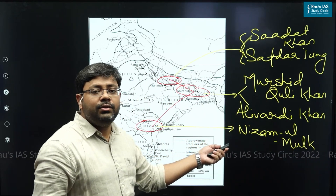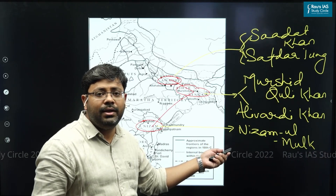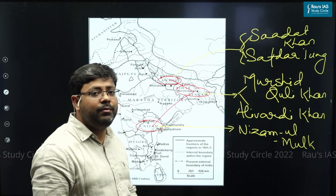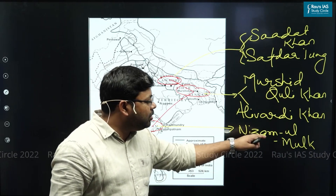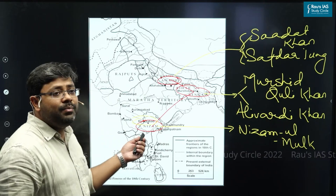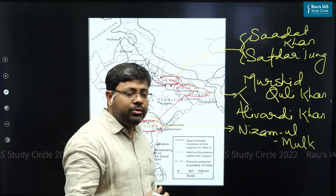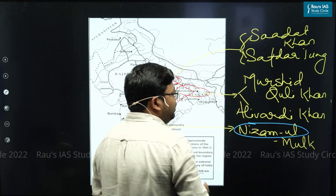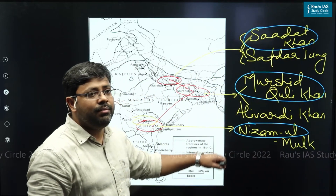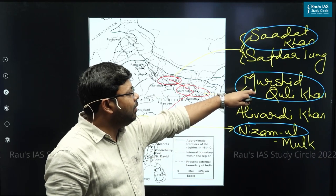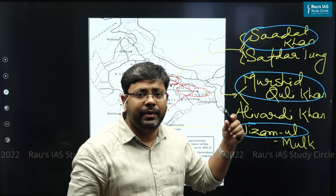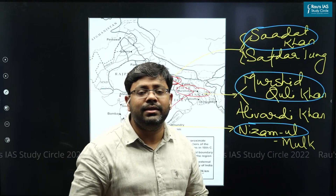The third successor state was Hyderabad, established by Nizam ul-Mulk as an independent kingdom. Nizam gradually became a title, and all rulers of Hyderabad started being called Nizams, but the first Nizam who established this independent kingdom was Nizam ul-Mulk. He was a very good administrator and in his times Hyderabad emerged as a big cultural center. Nizam ul-Mulk, Murshid Quli Khan, and Sadat Khan — those who established Hyderabad, Bengal, and Awadh — were all earlier Mughal officers, and that is why Bengal, Awadh, and Hyderabad are considered successor states.